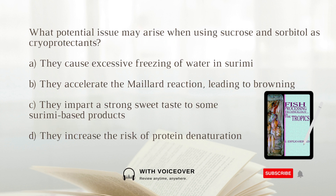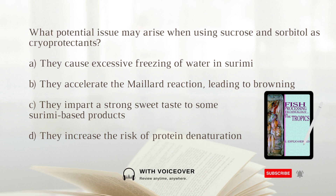What potential issue may arise when using sucrose and sorbitol as cryoprotectants? A. They cause excessive freezing of water in surimi. B. They accelerate the Maillard reaction, leading to browning. C. They impart a strong sweet taste to some surimi-based products. D. They increase the risk of protein denaturation. Answer: C. They impart a strong sweet taste to some surimi-based products.